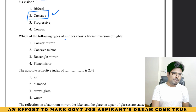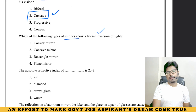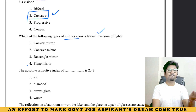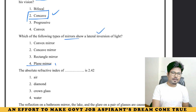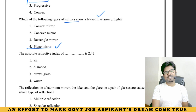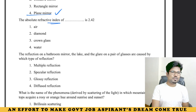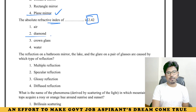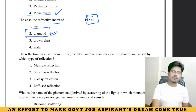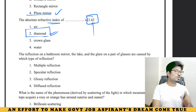Which of the following types of mirrors shows lateral inversion of light? Lateral inversion means left-right inversion — that is the property of a plane mirror. The absolute refractive index of diamond is 2.42. Diamond's refractive index is 2.42. This is from Lucent Physics.